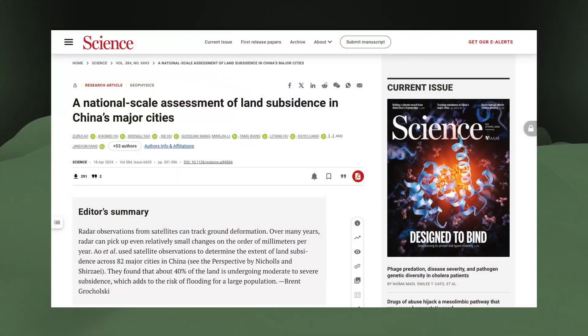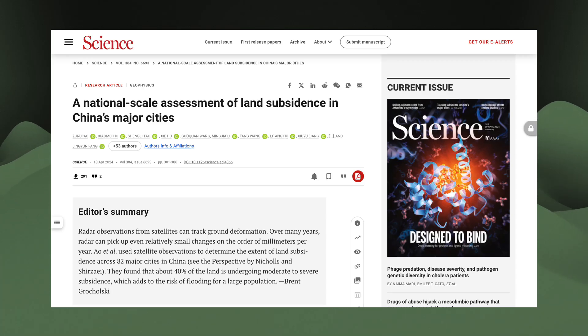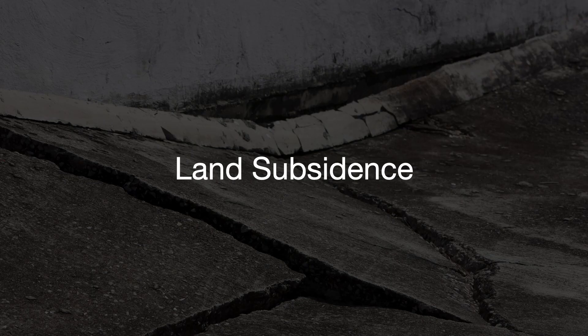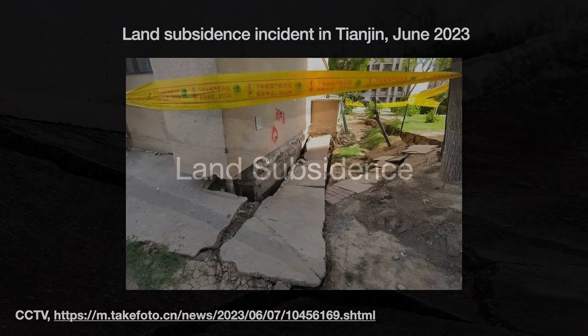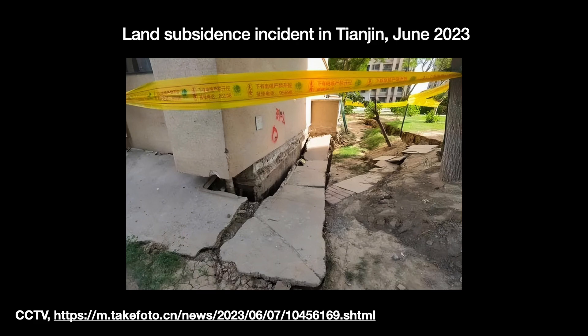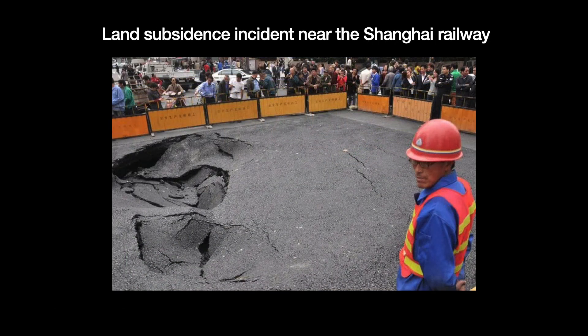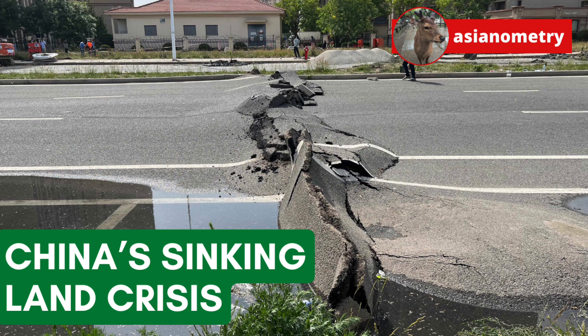There was a recent article in Science looking at a troubling trend of land subsidence in Chinese and Taiwanese cities. Subsidence is a fancy term describing when the earth's surface starts moving vertically downwards over time — in other words, sinking. These lands are sinking. This might seem like a recent occurrence, but its causes are long running and, at the heart of it, pretty simple: China is using too much groundwater. In this video, we look at China's land subsidence problem.